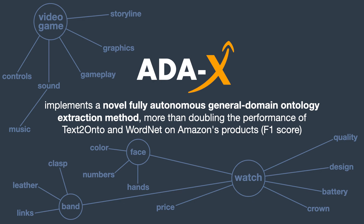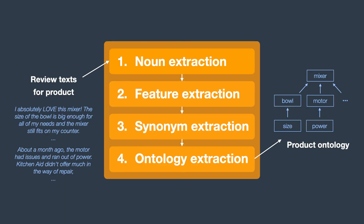On this slide we can see examples of ontologies completely automatically extracted by AdaX. For example, AdaX can distinguish that a video game has a storyline, graphics, and gameplay, while a watch has a face which contains numbers and hands, and a band which can be made out of leather or links. The ontology extraction pipeline consists of several natural language processing tasks, including two neural network classifiers based on the state-of-the-art BERT language model.